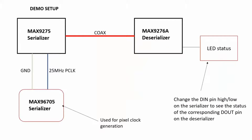Let's have a look at the demo setup block diagram shown on the screen. Here I have used the MAX96705 Coax EV kit to program an onboard oscillator to generate a 25 MHz pixel clock for MAX9275. You can of course use any clock generator in the range of 25 to 50 MHz, readily available in the market, to perform this setup.